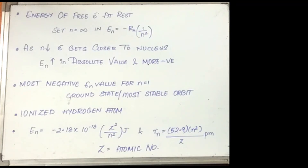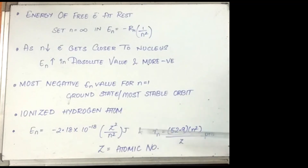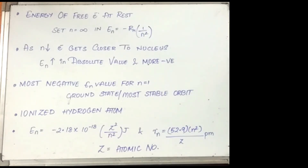Bohr's theory is applied to ions containing one electron similar to hydrogen, like He⁺, Li²⁺, Be³⁺, which are also called hydrogen-like species. The energy of the stationary orbits associated with these ions is: E_n equal to minus 2.18 × 10⁻¹⁸ × z²/n² joules, and the radius of the orbit is given by R_n equal to 52.9 × n²/z picometres, where z is the atomic number. The energy becomes more negative and radius smaller as z increases, binding the electron more tightly. The magnitude of velocity increases with increased positive charge on the nucleus and decreases with increase in the principal quantum number.